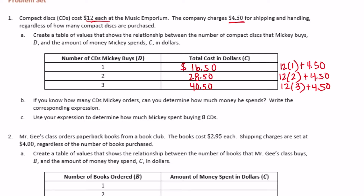We can put the dollar sign there. Part B: If you know how many CDs Mickey orders, can you determine how much money he spends? Write the corresponding expression. The only thing that's changing is what's in the expression — everything else stays the same, so we're just going to replace that with a variable. This represents the number of CDs, D. So we can say 12D plus $4.50 would tell us how much it costs to buy however many CDs and have them shipped.